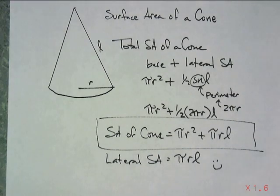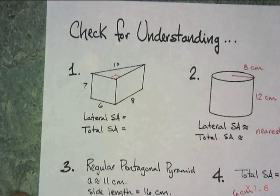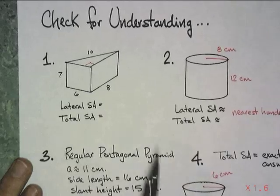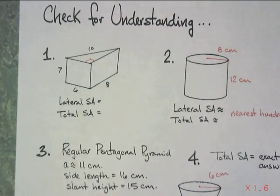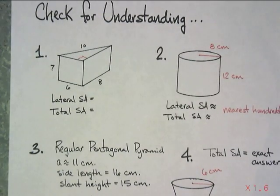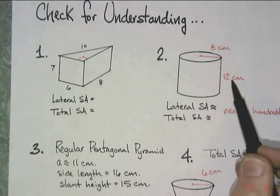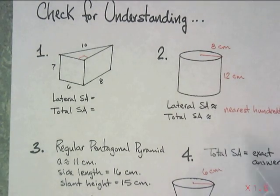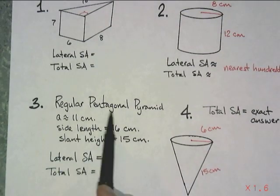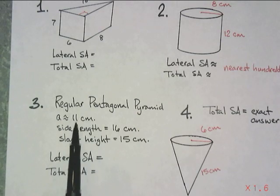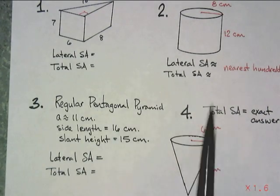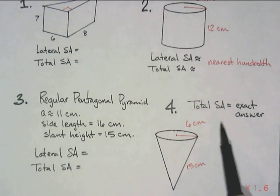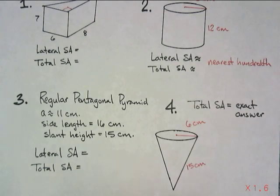And finally, some questions for you. You can go back in the video, look over, and answer some things. I've got a triangular prism that's got sides of 6, 7, 8, and 10 edges. I've got a cylinder with an 8 centimeter radius and a 12 centimeter height. And it looks like nearest hundredth here. A regular pentagonal pyramid, didn't draw it for you. Apothem 11 centimeters, side length 16, slant height 15 centimeters. I want you to find the lateral surface area and total surface area on all those. And then finally a cone. And I want the exact answer of the total surface area. Good luck. See you tomorrow.